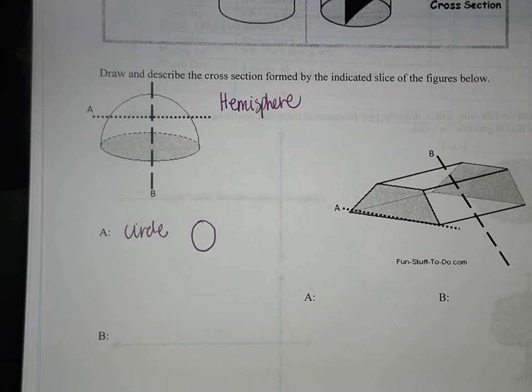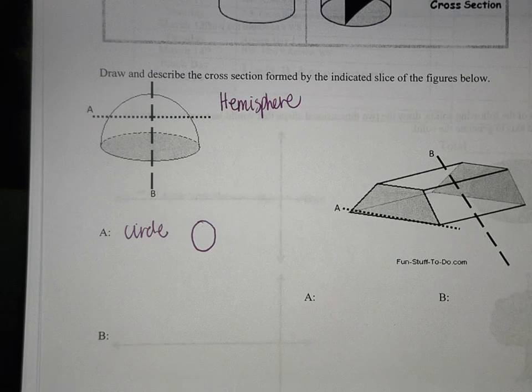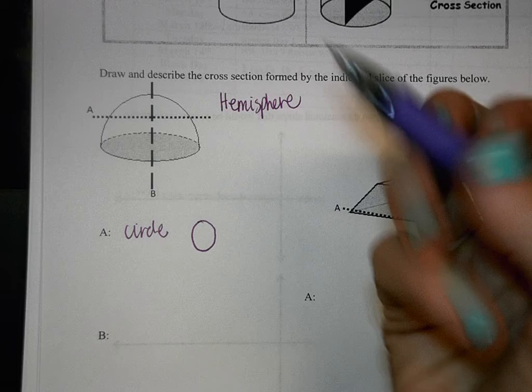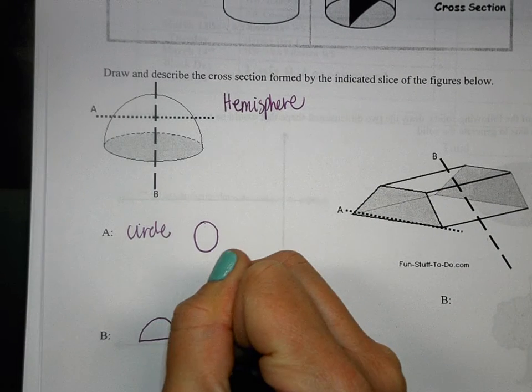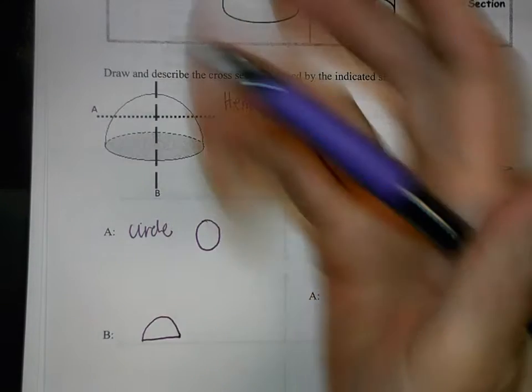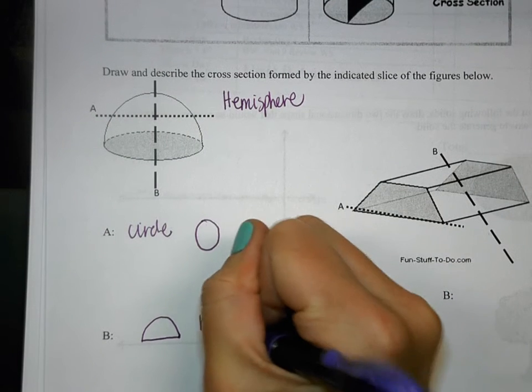B, what do you think is gonna happen when you slice through it that way? What's it gonna make? I heard it—a semicircle or a half circle. So it will look something kind of like this if you cut through this way. We can call that a half circle or a semicircle.